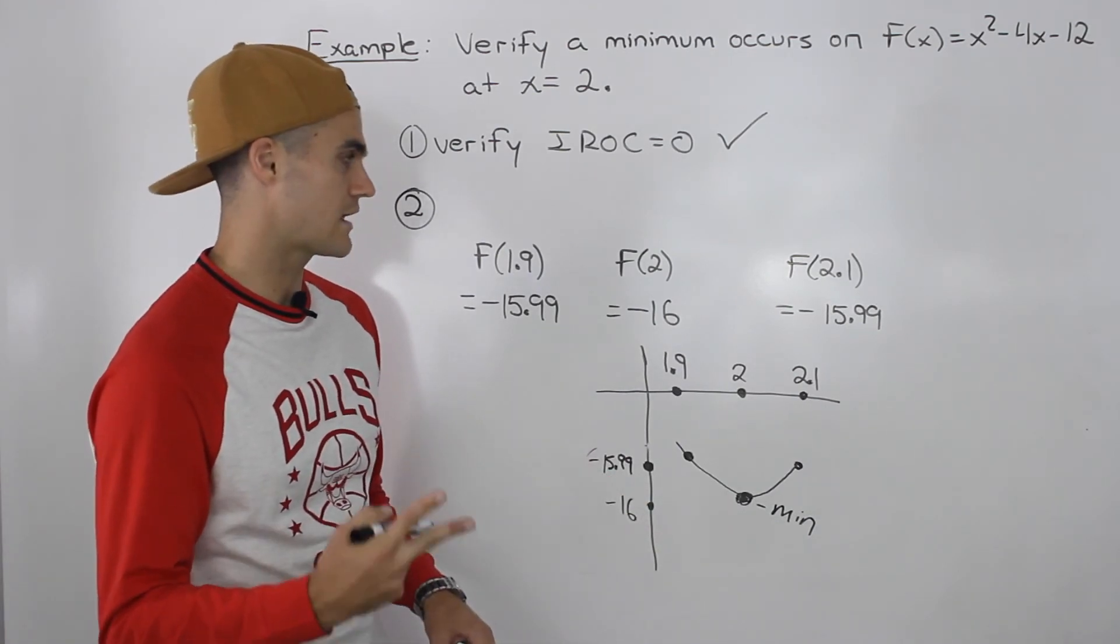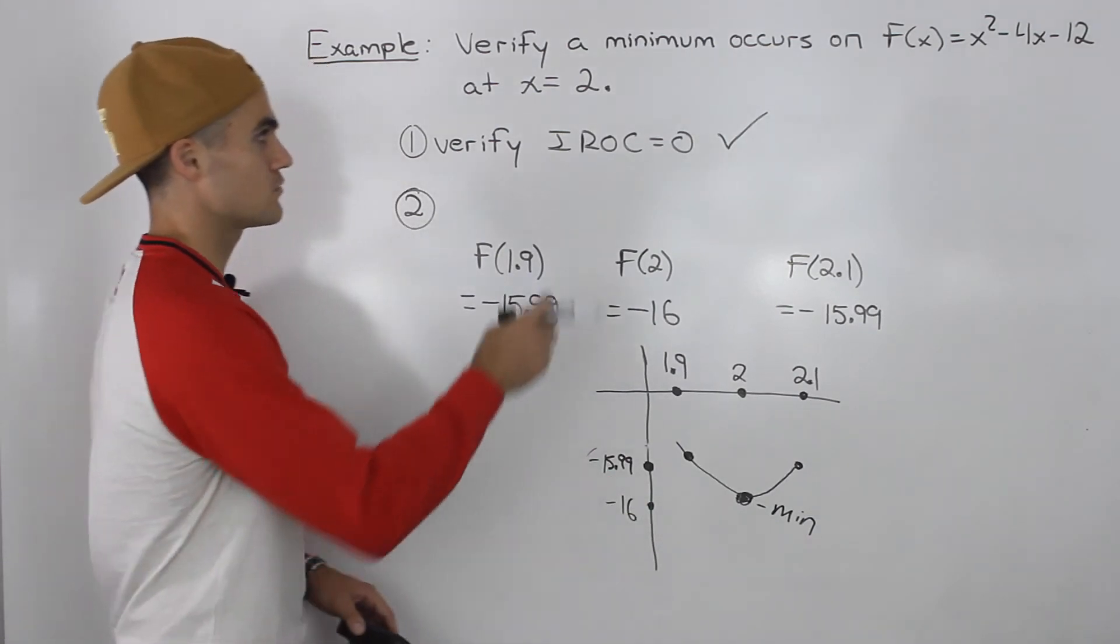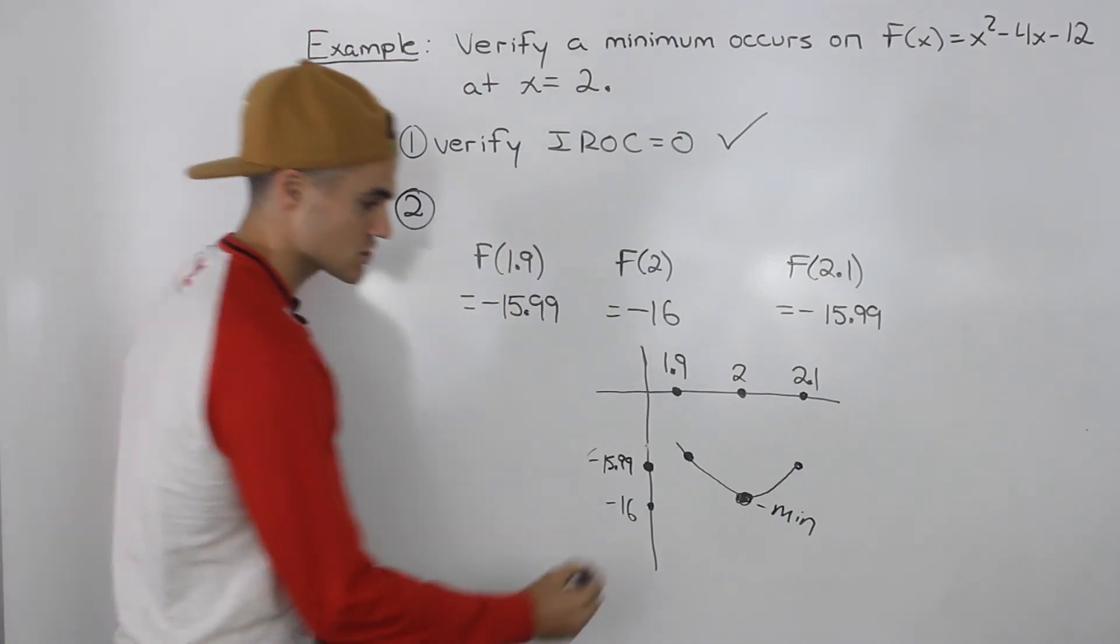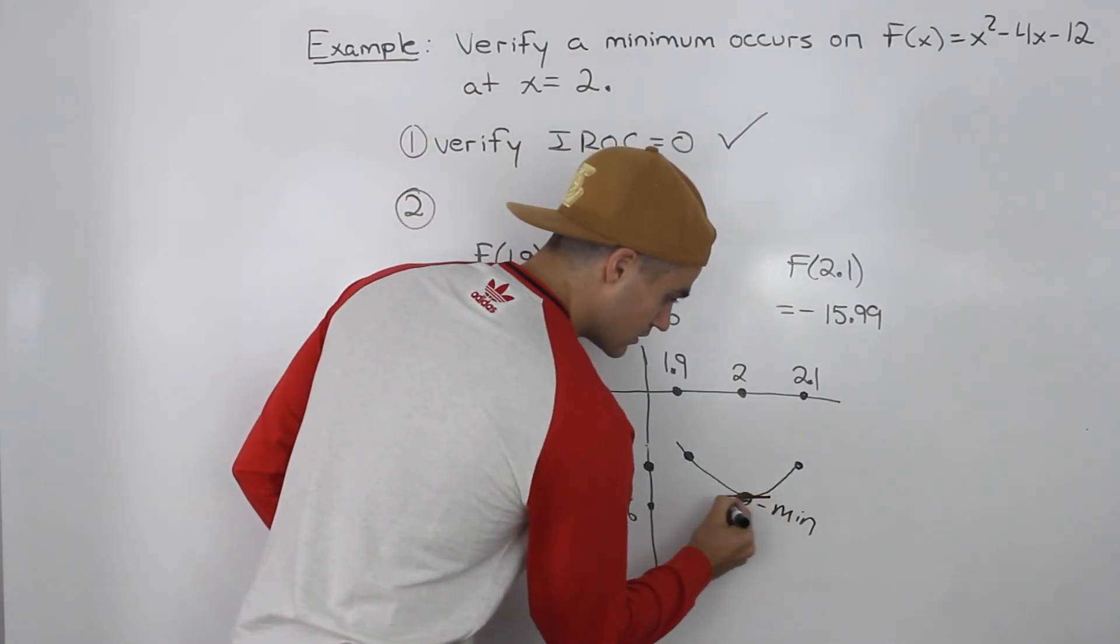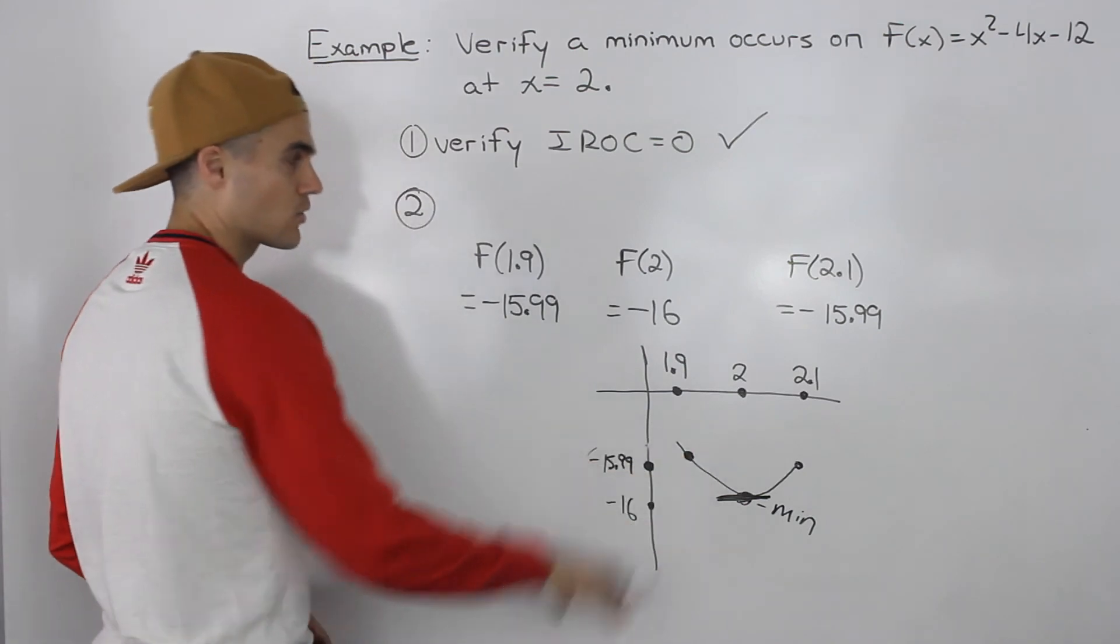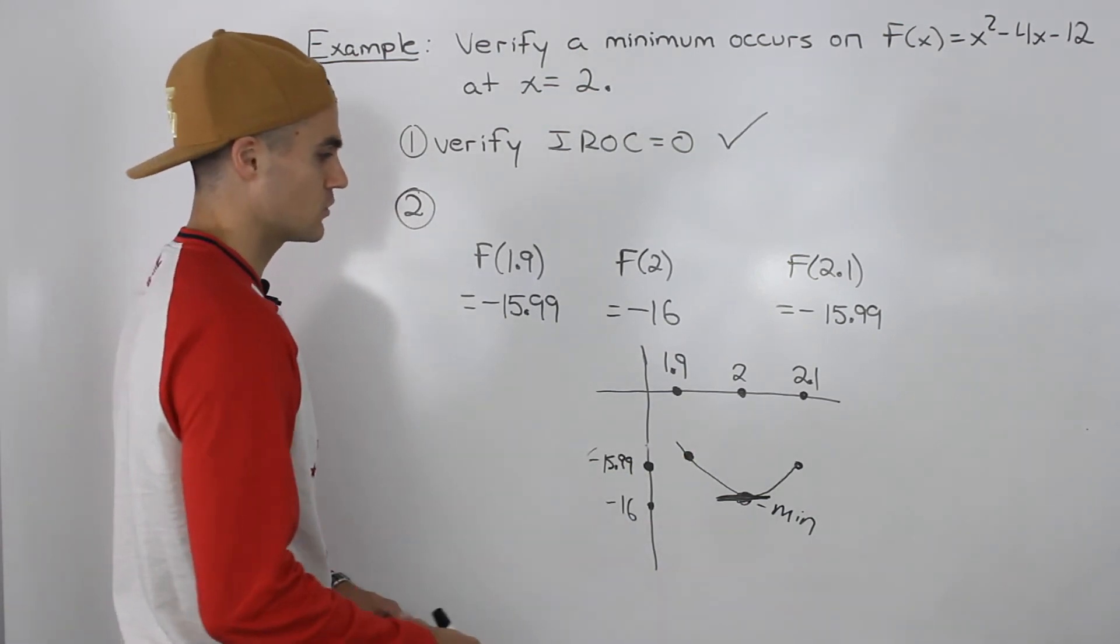We showed that in two steps. First step, we showed that the instantaneous rate of change, the slope of the tangent, is zero because it's a horizontal line. We did that with the difference quotient.